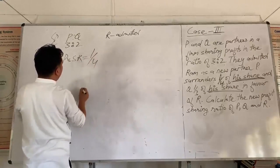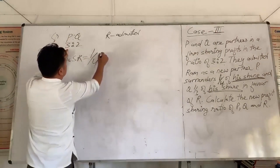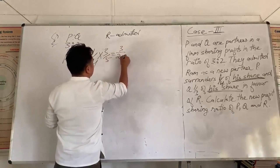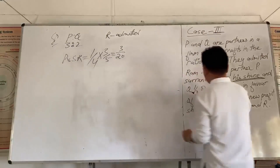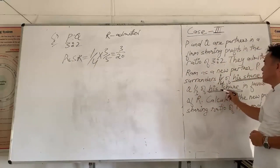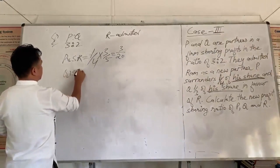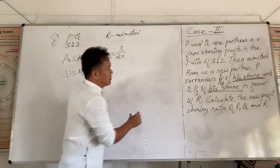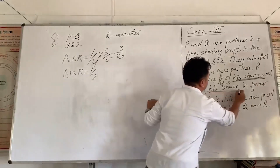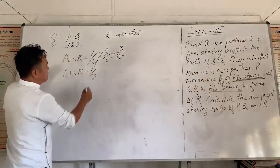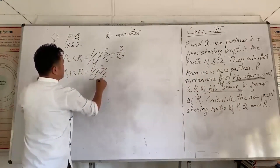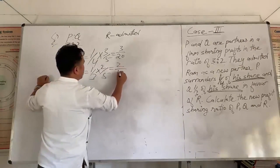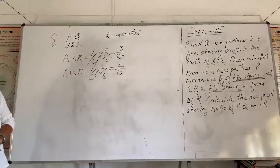P sacrifices one-third of his share, meaning one-third multiplied by 3 by 5, which gives 3 by 15, which simplifies to 1 by 5. Wait — that gives us 3 by 20. And Q surrenders one-third of his share. Again, 1 by 3 is not the sacrificing ratio directly. Q's share is 2 by 5, so Q's sacrifice is 1 by 3 multiplied by 2 by 5, which gives 2 by 15. So we now have the sacrificing ratios of all partners.